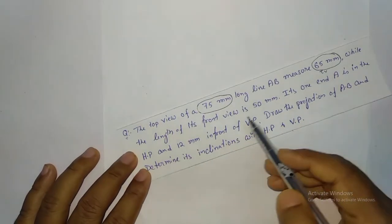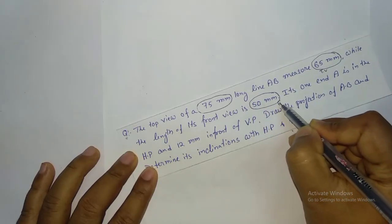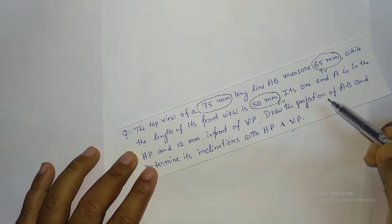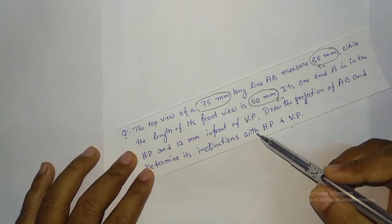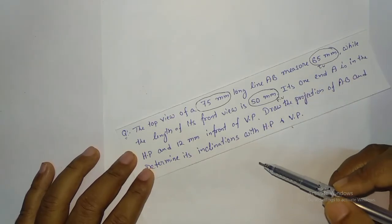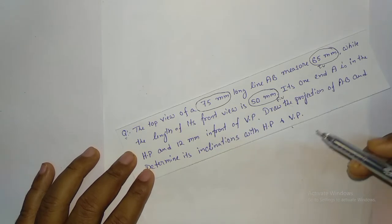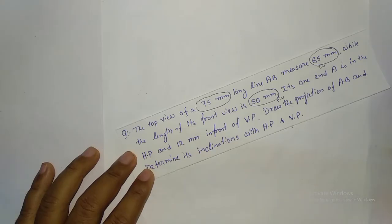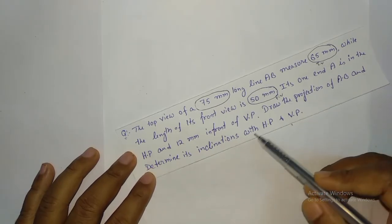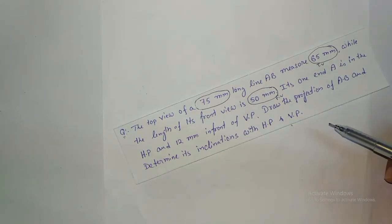While the length of its front view is 50 mm. End A is in the HP and 12 mm in front of the VP — meaning it will be shown 12 mm below the XY reference line. Draw the projection of AB and determine its inclination with HP and VP.